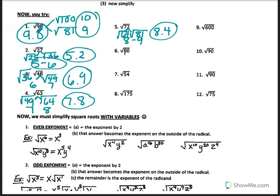The square root of 80 — 80 looks like a good number but is it a perfect square root? No. So if it's not perfect, find the two perfect squares. 81 is going to be one of them and 64 is going to be the other. Is 80 closer to 81? So it's going to be like 8.9.